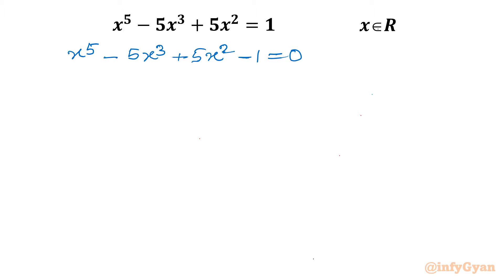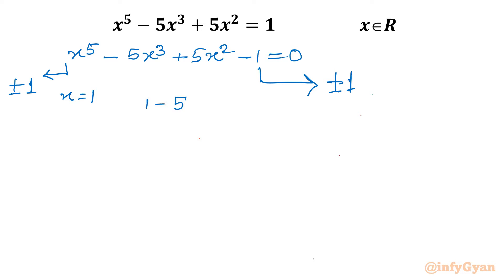Now I will apply the rational root theorem. The constant coefficient is 1, so the eligible factors are plus or minus 1. The leading coefficient is also 1, so the eligible factors for the leading coefficient are also plus or minus 1. Taking the ratio, x equals plus 1 or minus 1. Putting x equals 1: 1 minus 5 plus 5 minus 1 equals 0. So x equals 1 is a solution.